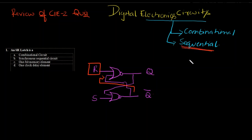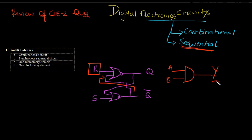If I had a gate something like this — A, B and Y — this is a combinational circuit because the output is always dependent on the present input A and B. We don't have any past states joining here, so it is not at all a sequential circuit.